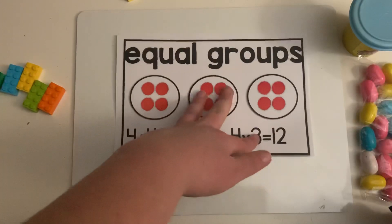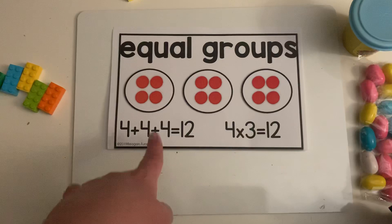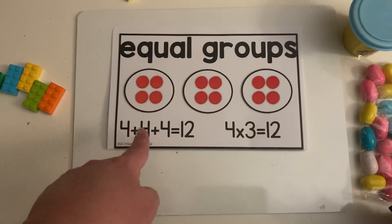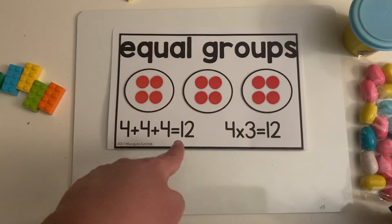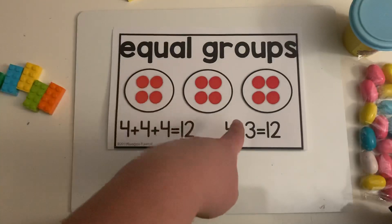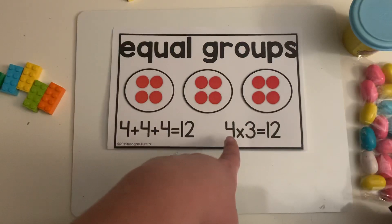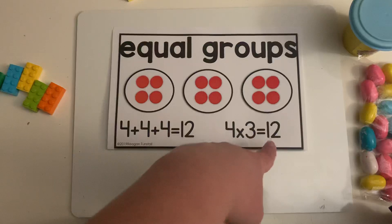One way that we can write this problem is by using repeated addition. So we have four plus four plus four, which equals 12. An easier way we can write that is using a multiplication problem, which is four times three equals 12. Four circles times three groups of four equals 12.